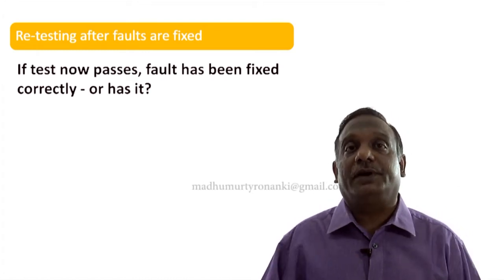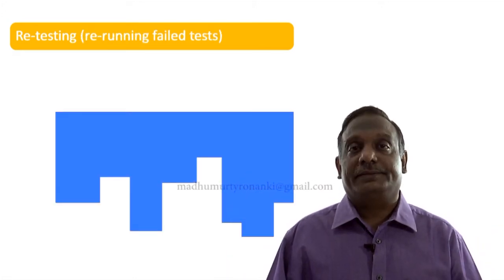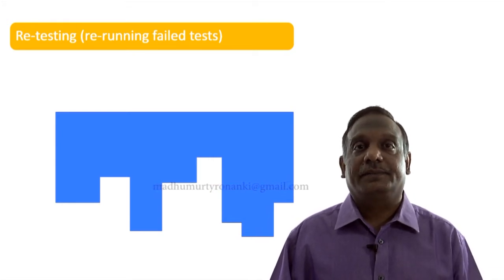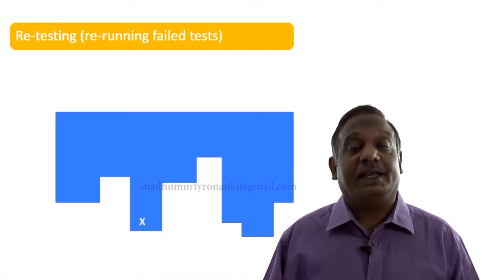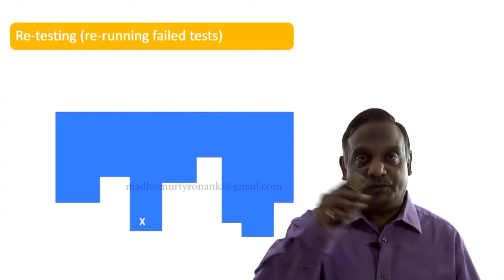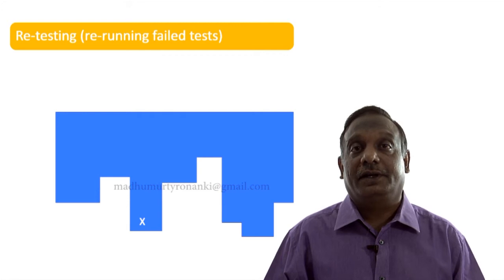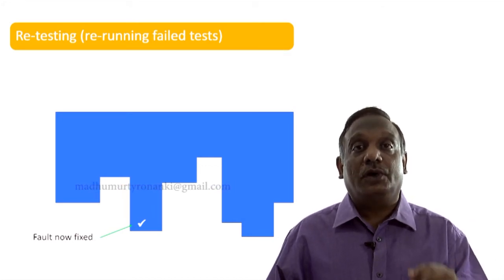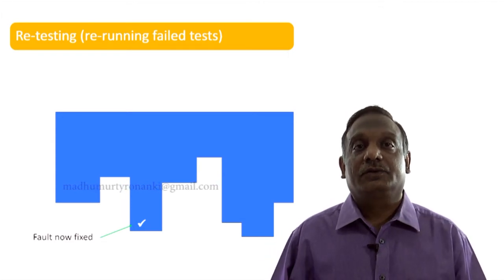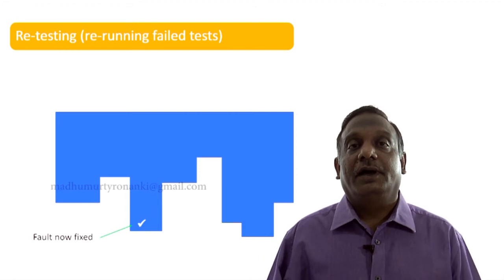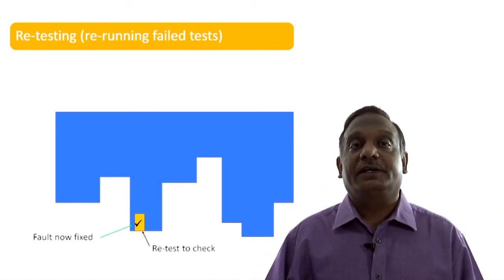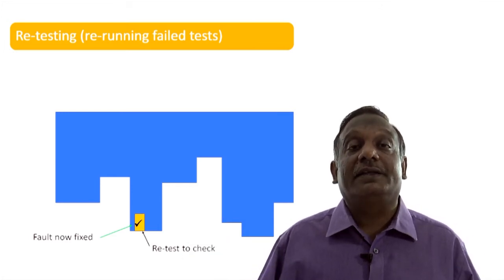Let us look at this from a graphical point of view. Let's say a software build one arrived and you have written 100 test cases to test it. When you tested, 99 tests passed but one test case failed — the 77th test case, shown as a cross mark on screen. You report this bug to the developer, they fix it, locate the problem, debug it, and make a modification to the code. The fault is now fixed. A new build comes to you. You take your 77th test case, keep everything the same, test on this new build, and it is perfect now. That is retesting and confirmation testing.